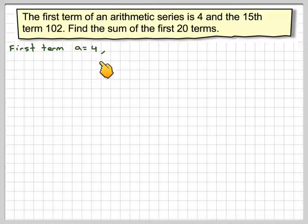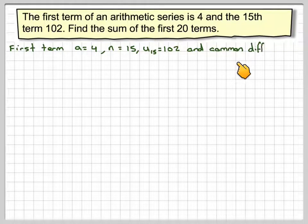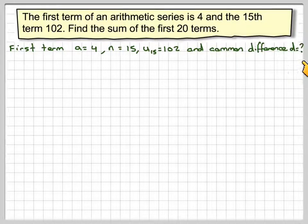We've got the first term is 4, so A equals 4. N is 15, and the 15th term is 102. But we don't know the common difference D.